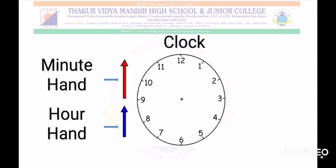Students, today we will learn to read time and understand how a clock works. Can you see a clock here? It has numbers from 1 to 12 on it. A clock normally has 3 hands but today we will learn specifically about 2 hands. There is a big hand in red colour which is called a minute hand, and a small hand in blue colour which is called an hour hand, which shows the time.